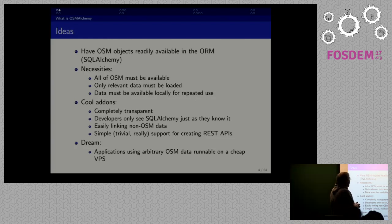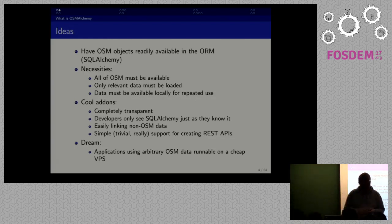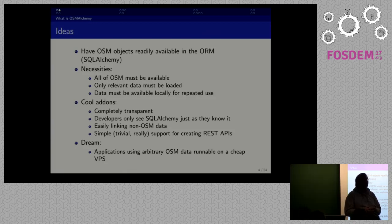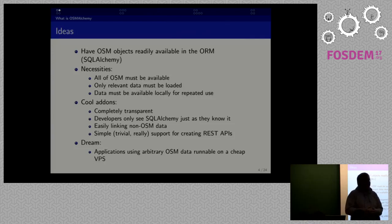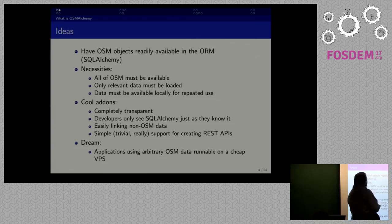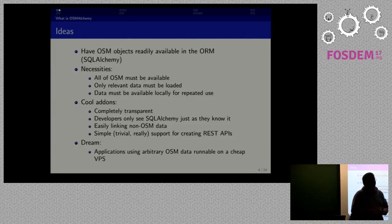There were a few cool add-ons we wanted to add. First of all, we were using SQLAlchemy, which is an object-relational mapper for SQL-based databases in Python. It allows definition of database tables and views in pure Python objects, and you can access them as pure Python objects — the mapper does all the work creating tables in the SQL database, maintaining relations with foreign keys, and all of that. We wanted to keep this transparent so developers using SQLAlchemy could just use OpenStreetMap as if it were available in the local SQL database, even if it isn't.